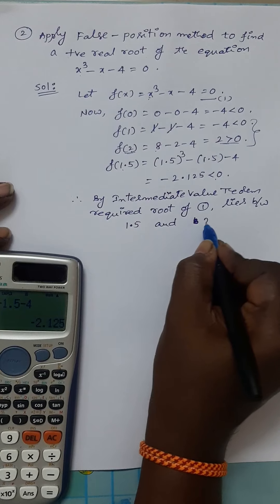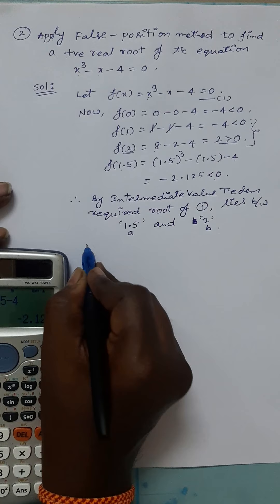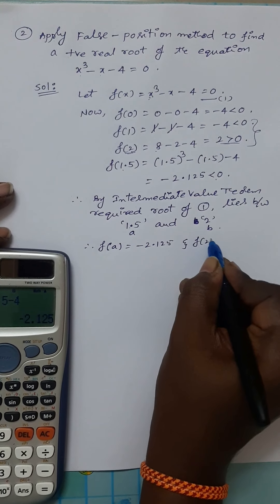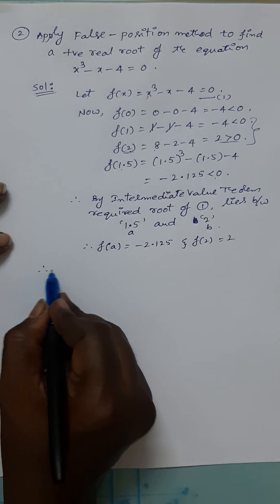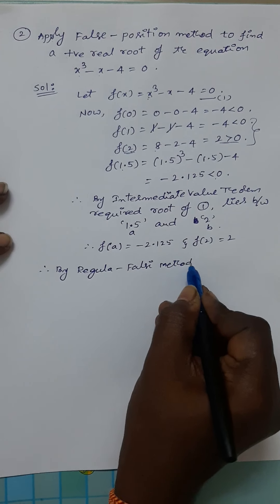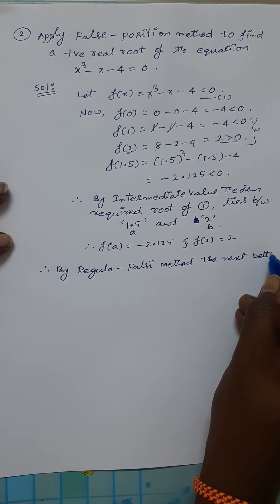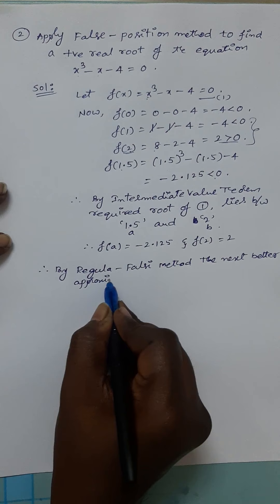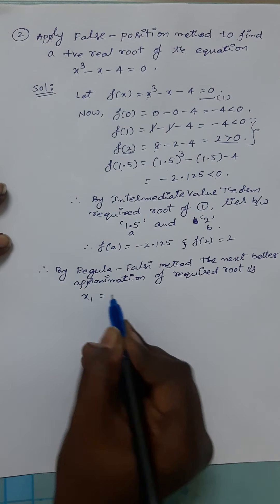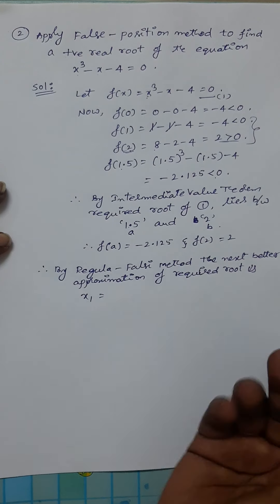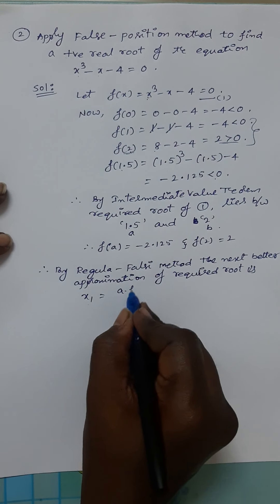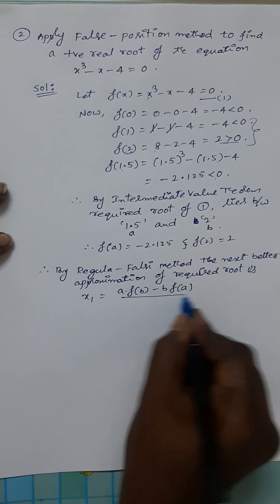So these are the initial approximations. Take a = 1.5 and b = 2. So f(a) = f(1.5) = -2.125 and f(b) = f(2) = 2. By the regular falsi method, the next better approximation of the required root is x1. The formula for the next better approximation in the false position method is: (a·f(b) - b·f(a)) / (f(b) - f(a)).